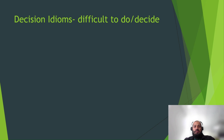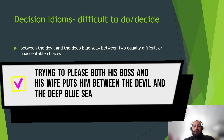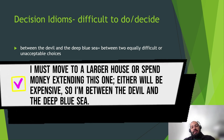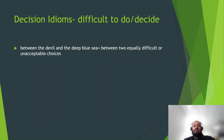Now we move to decision idioms — these are for situations that may be difficult to decide. The first is 'between the devil and the deep blue sea,' meaning between two equally difficult or unacceptable choices. For example: 'Trying to please both his boss and his wife puts him between the devil and the deep blue sea.' Or: 'I must move to a larger house or spend money extending this one — either will be expensive, so I am between the devil and the deep blue sea.'